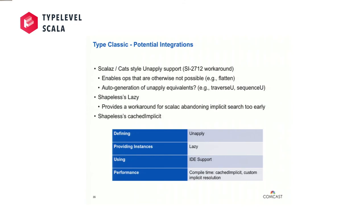Here are other things we might want to consider pulling into something like Type Classic: in Scalaz and CATS, both products have this unapply trick to work around higher-order unification problems. If we had that unapply trick available in Type Classic itself, we could automatically generate things like traverseU and sequenceU rather than relying on people to manually play the jigsaw puzzle to make it compile. Shapeless has stuff to work around implicit search bailing out early when deriving instances. We've got other stuff in Shapeless via cached-implicit to help with compile-time performance issues as it relates to deriving large instances. Maybe we could categorize those into this same taxonomy and look at how each of them, if part of this Type Classic umbrella, could support integrations.